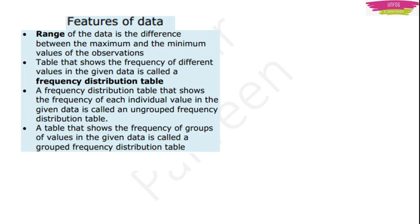Now when we are talking about this data, what are the features of data? Means how should one data be? It will have some properties or features. The first feature is range — R-A-N-G-E. What is this range? It is nothing but the difference between maximum and minimum values given in the data.